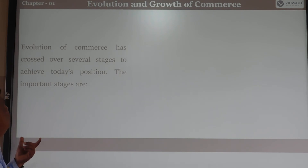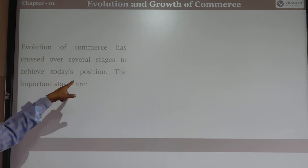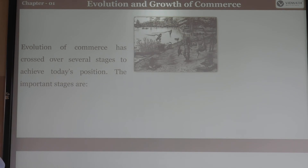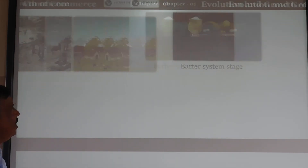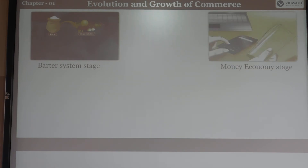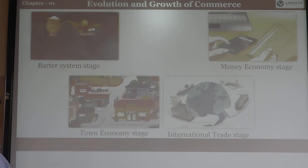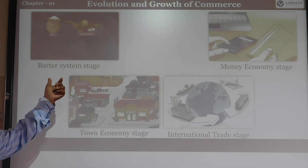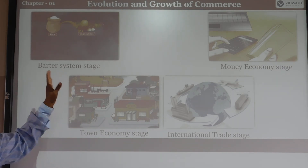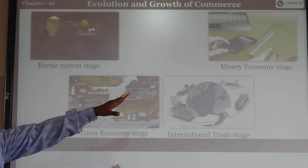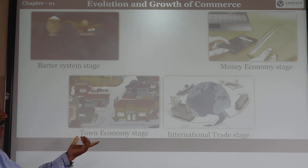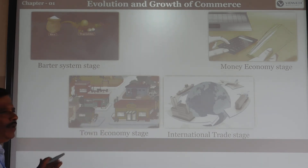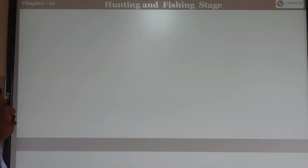The evolution of commerce has crossed over several stages to achieve today's position. The stages are: first, the Barter System stage; next, the Money Economy stage; then the Town Economy stage; and finally the International Trade stage. Step by step, that is the growth of commerce. First, however, is the Hunting and Fishing stage.